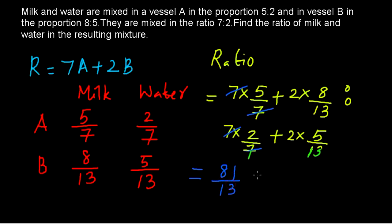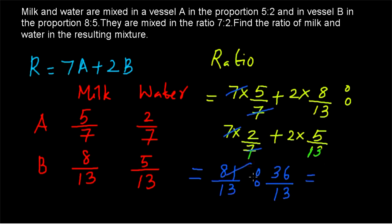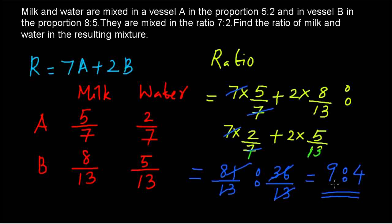After cancellation, we get 5 plus 2 × (8/13), so 13 × 5 = 65, and 65 + 16 = 81, giving us 81/13. For the water side: 2 plus 10/13, so 13 × 2 = 26, and 26 + 10 = 36, giving us 36/13. So the final ratio is 81 to 36. Cancelling by 9, we get 9 is to 4. So our final answer is 9 is to 4. Thank you for watching.